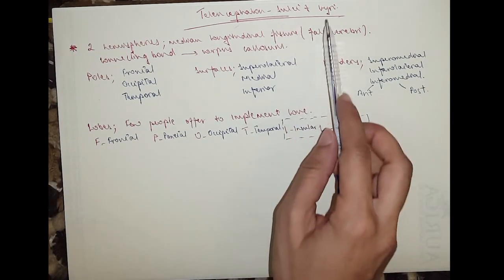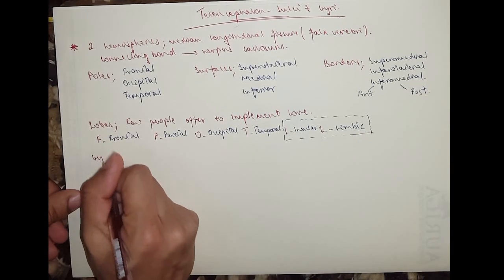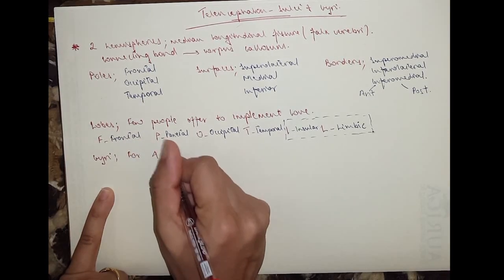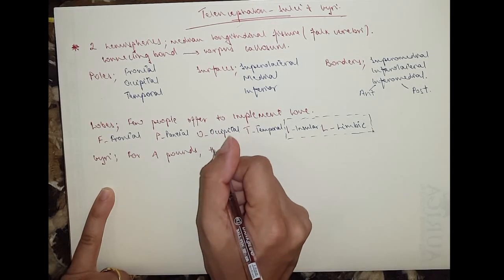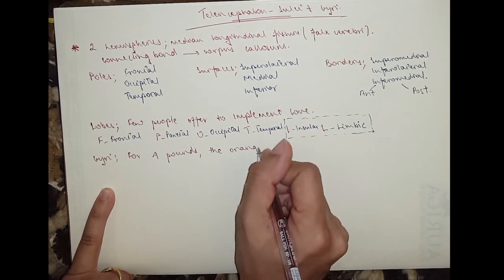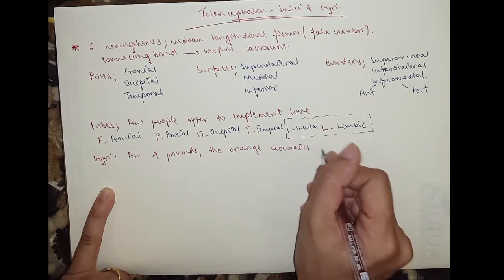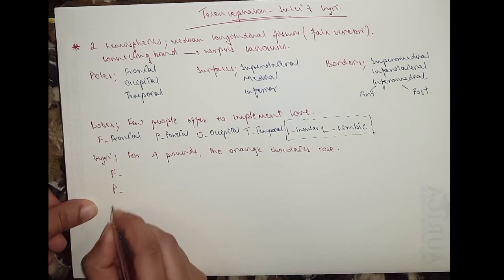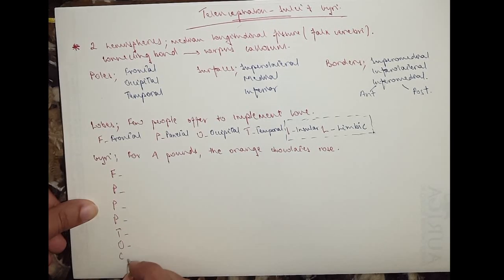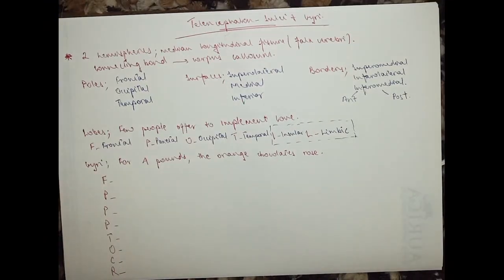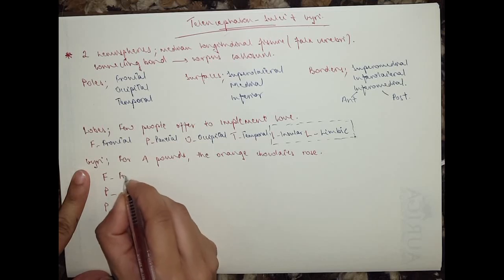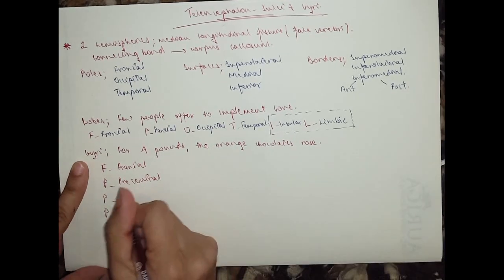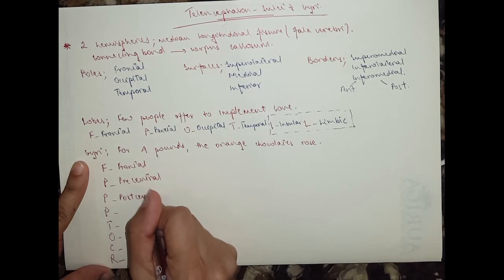Now we move on to the gyri. There's another mnemonic for the important gyri: 'Four pounds, the orange chocolates rose.' So we've got F, four Ps, T, O, C, and R. F would be frontal, the four Ps would be precentral, postcentral, parietal — these are important names of the gyri.